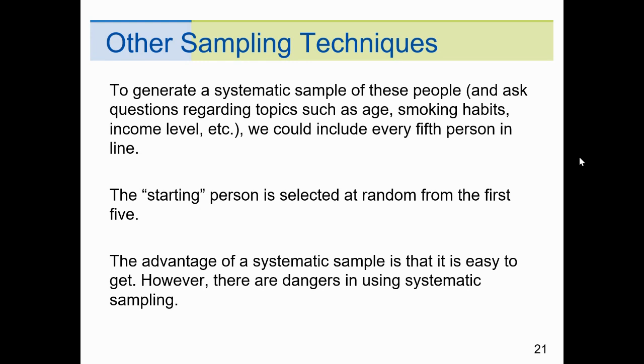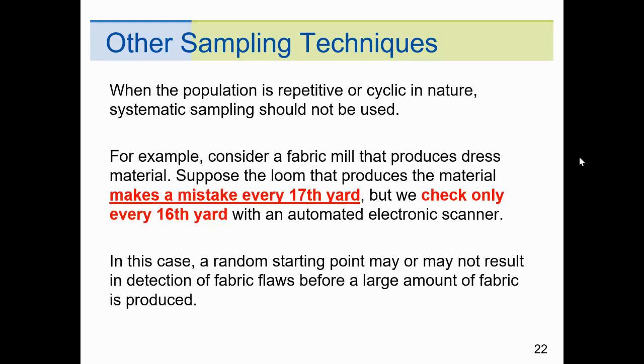For example, people lining up to buy concert tickets are in order. To generate a systematic sample and ask questions regarding this age, smoking habits, income, and so forth, we could start with the fifth person, and then every fifth person after that. So it would be the fifth person in line, the 10th, 15th, 20th, 25th, and so forth. You see the system there, every fifth person or every second person or every fourth person. The advantage of systematic sampling is that it's easy. However, there are dangers. The danger would be, let's say you're at a fabric mill, and you're checking for mistakes in material, and you check every 16th yard that's produced by the loom. Well, maybe that the loom makes a mistake every 17th yard. Here you are checking every 16th. All right? In this case, a random starting point may or not result in the detection of the flawed fabric. So systematic sampling has its faults, its limitations.